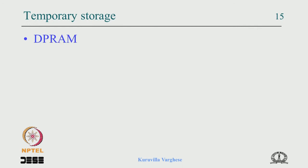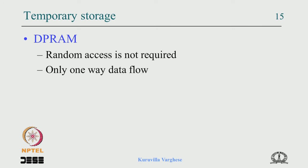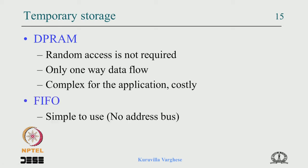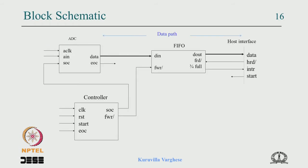The DPRAM allows two-way data flow and is costly due to multiple ports — too complex for this application. The ideal solution is a FIFO: it is simple to use, addressing is implicit, and it is sufficient for the application. So we have the controller with clock and reset, start signal from the host, start of conversion output, FIFO write signal, end of conversion input, and three-quarter-full connected to interrupt.